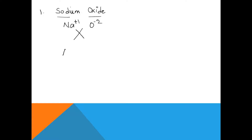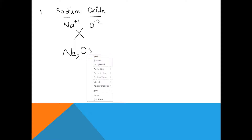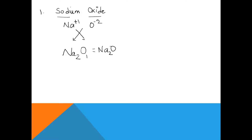The charges — the plus and minus — need not be written. The number 2 from oxygen touches the feet of sodium, and the number 1 from sodium touches the feet of oxygen. So it is written as Na₂O. This method is called the crisscross method.